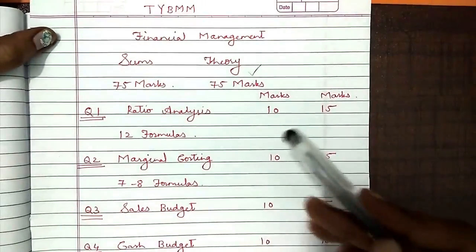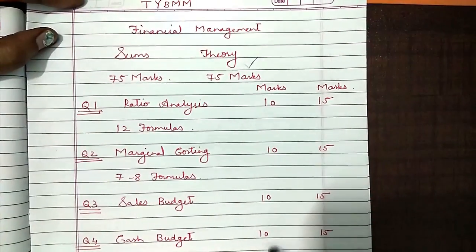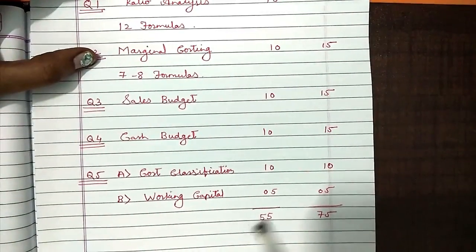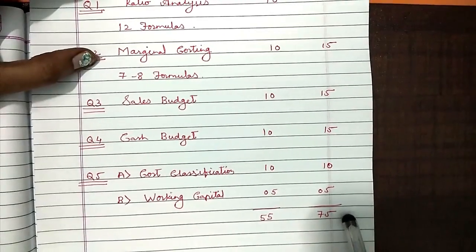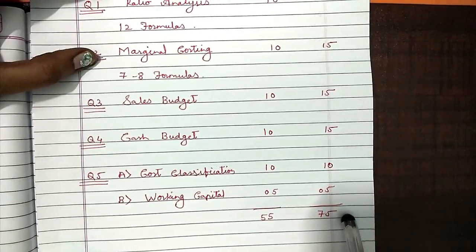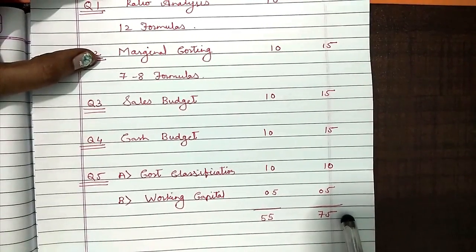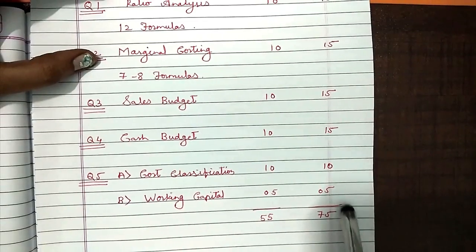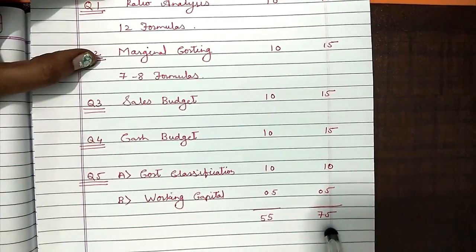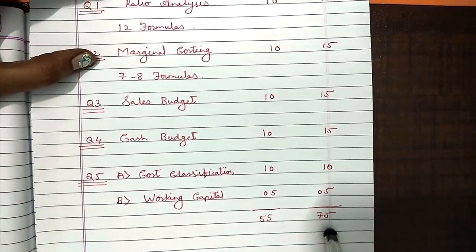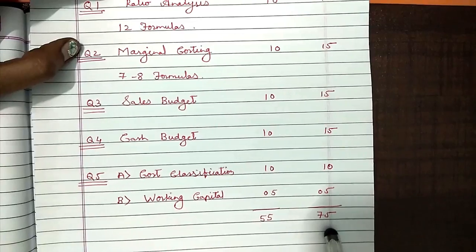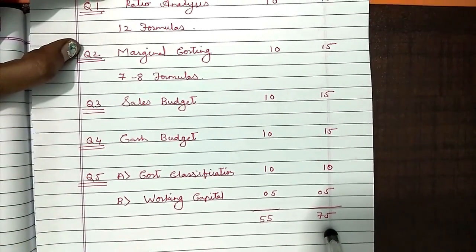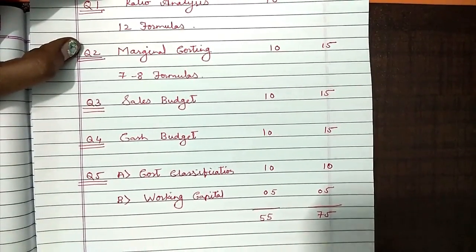So even if you do not put in 100% effort, you can score a minimum 55 marks and a maximum 75 marks. We are smart people, so we are definitely hoping for 75 out of 75. All the best for your financial management examination. Please subscribe to my channel and write your comments below. Thank you.